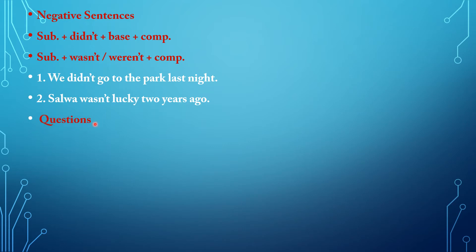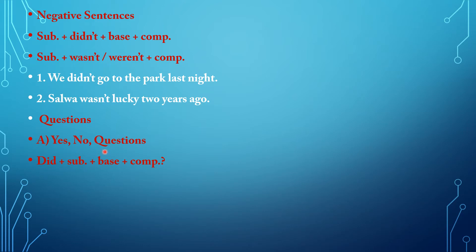We come to the questions. Questions are divided into two types. The first type we call yes/no questions. Either you begin your question by putting the auxiliary did, plus subject, plus base verb, plus complement and the question mark. Or you begin your yes/no question by putting verb to be — was or were — plus subject, plus complement.